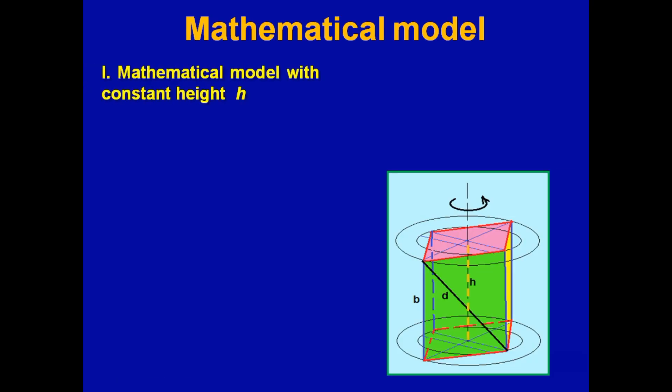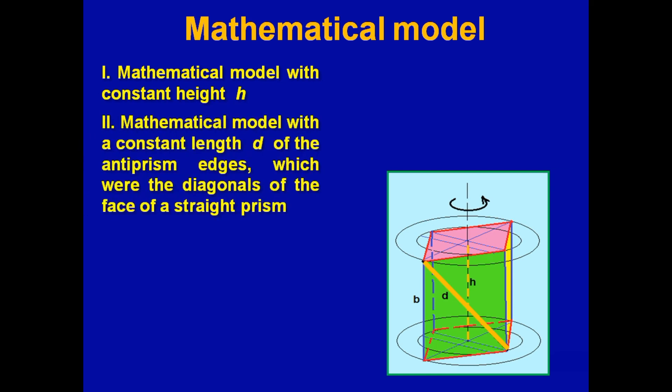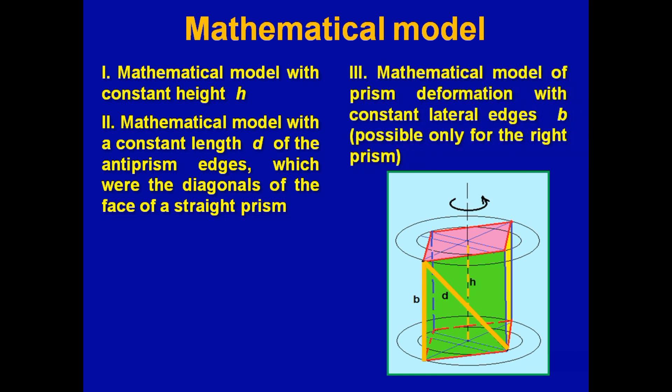The project considers various models for a twisted anti-prism. Mathematical model with a constant height h. Mathematical model with a constant length d of the anti-prism edges, which were the diagonals of the face of a straight prism, and mathematical model of prism deformation with a constant lateral edge b. That's possible only for the right prism.